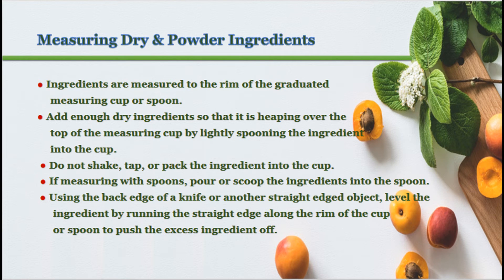Use these methods for measuring dry and solid ingredients. Ingredients are measured to the rim of the graduated measuring cup or spoon. Add enough dry ingredients so that it is heaping over the top of the measuring cup by lightly spooning the ingredient into the cup. Do not shake, tap, or pack the ingredient into the cup. If measuring with spoons, pour or scoop the ingredients into the spoon. Using the back edge of a knife or another straight-edged object, level the ingredient by running the straight edge along the rim of the cup or spoon to push the excess ingredient off.